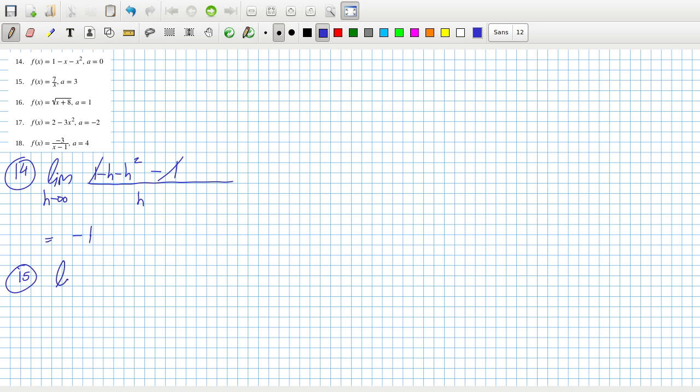15. Limit as h goes to 0, minus 7 over 3 and 7 over 3 plus h. So that would be limit as h goes to 0 over h over 9 plus 3h, 21 minus 21 minus 7h. They cancel. And they cancel. So you're just going to be left with minus 7 over 9.